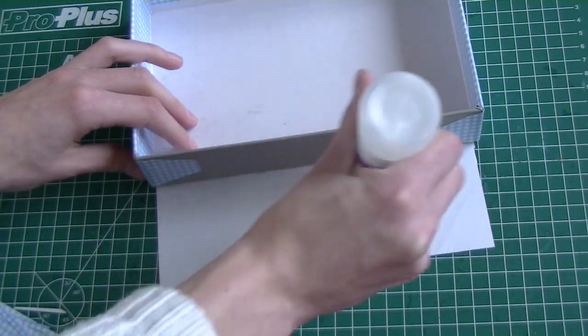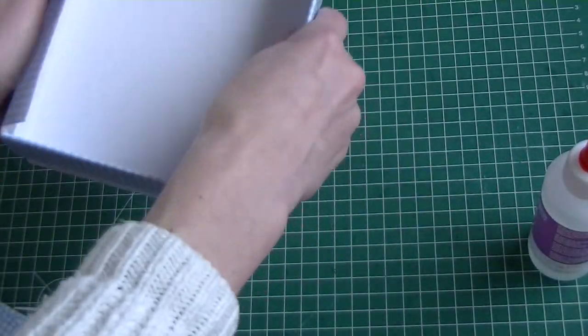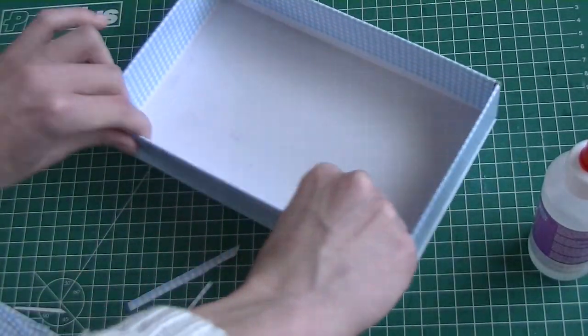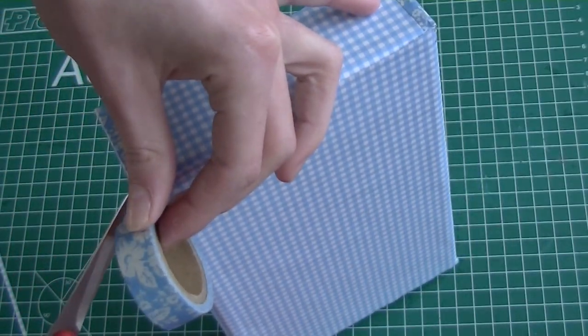Add glue to the bottom of the box. I added washi tape to the edges to give the box a nicer finish.